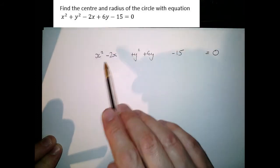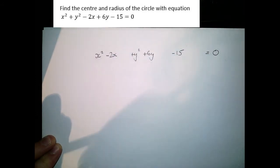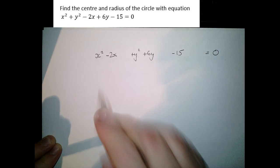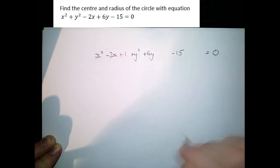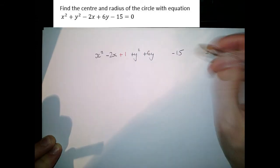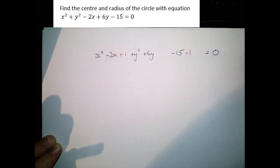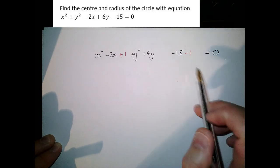So remember when we complete the square we're going to take a half of our minus 2 and that's going to go in there. Now I've just added 1 so I'm going to subtract 1 so that I keep the equation the same, still equal to zero.